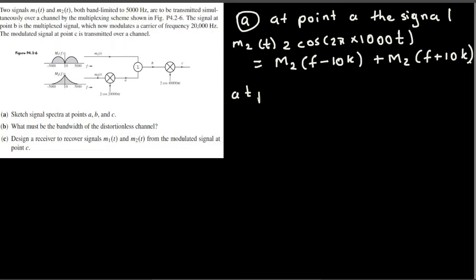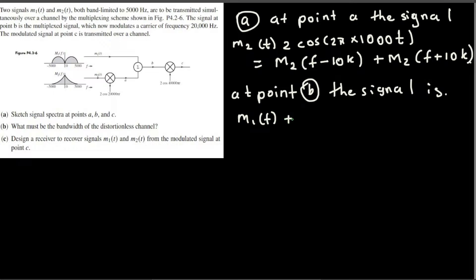At point B, the signal is m1(t) added with m2(t) times 2cos(2π × 10,000t). This represents m1 unchanged plus the DSB-modulated version of m2 centered at 10kHz.